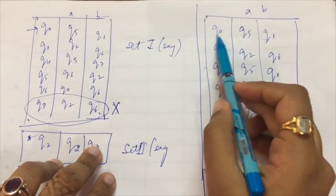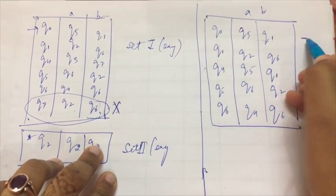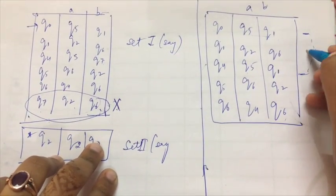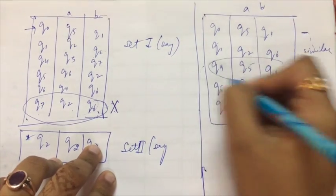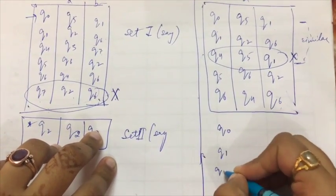Now again we'll analyze it. We find out that Q0 transits to Q5 and Q1, and Q4 also transits to Q5 and Q1. That is, this state and this state are similar. So I can again remove this state from it.